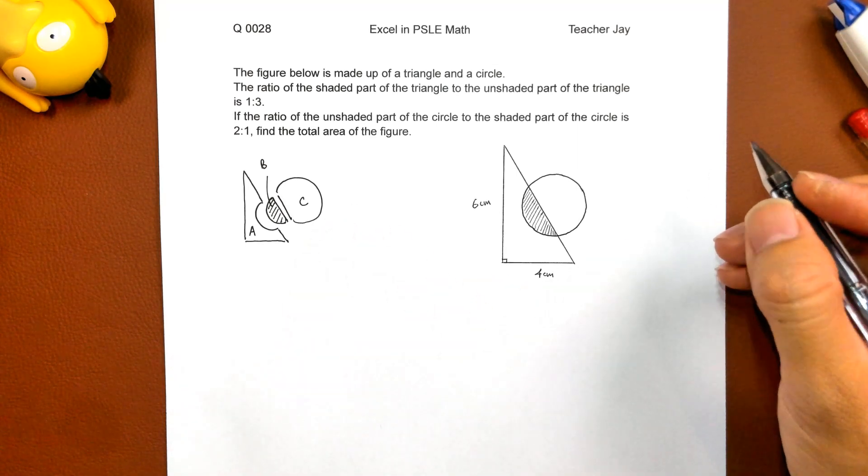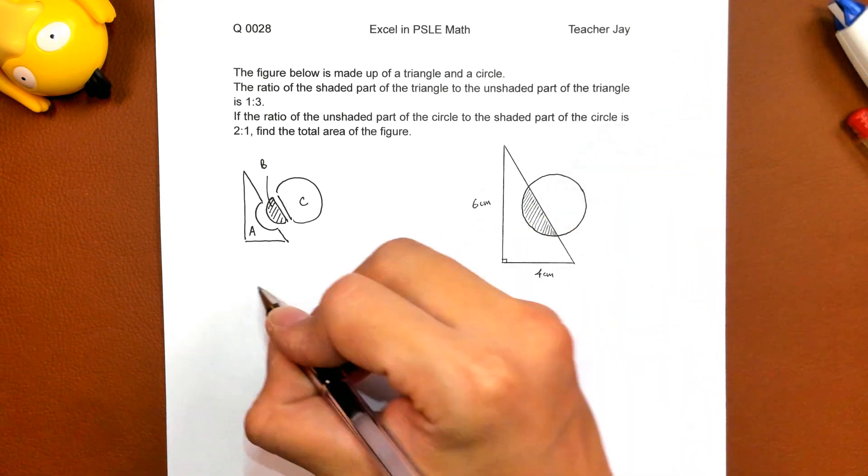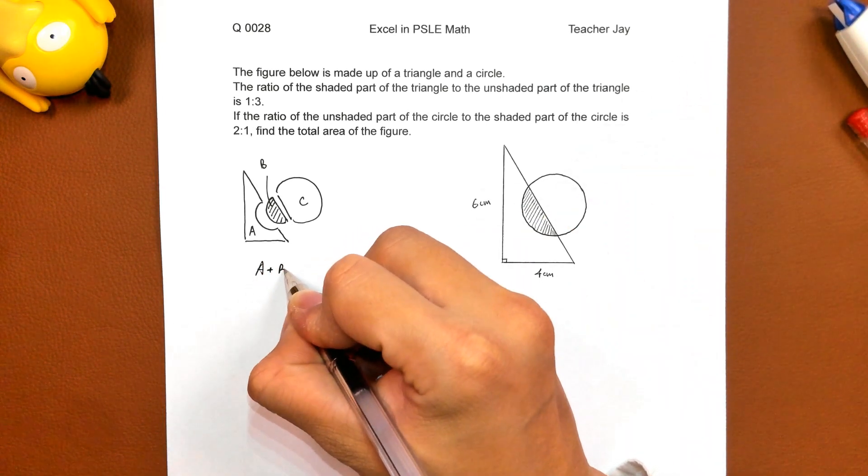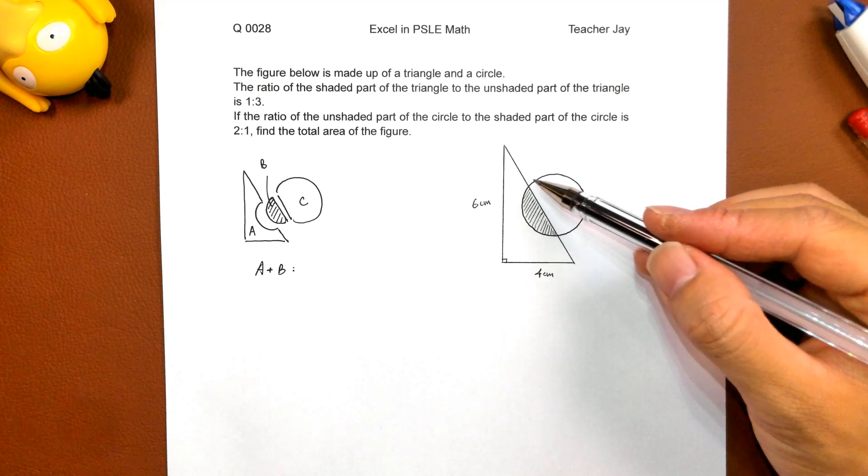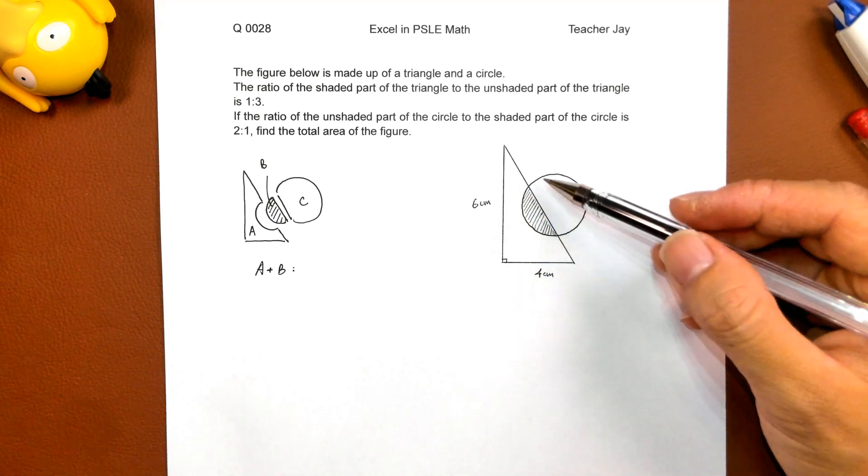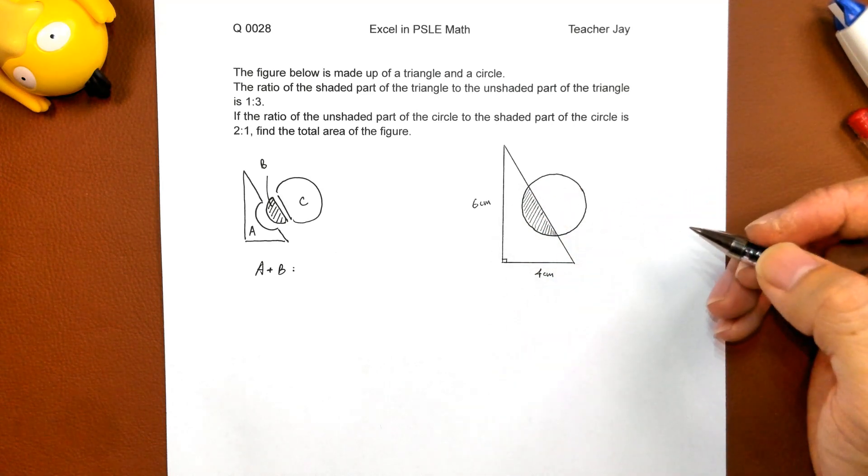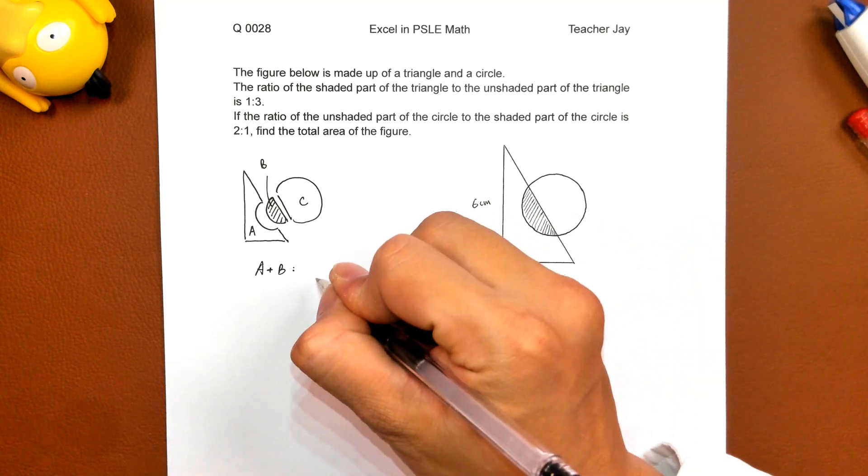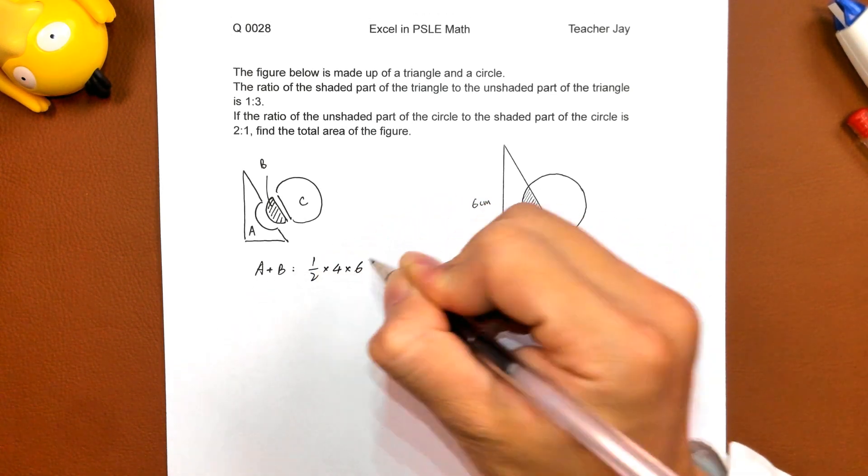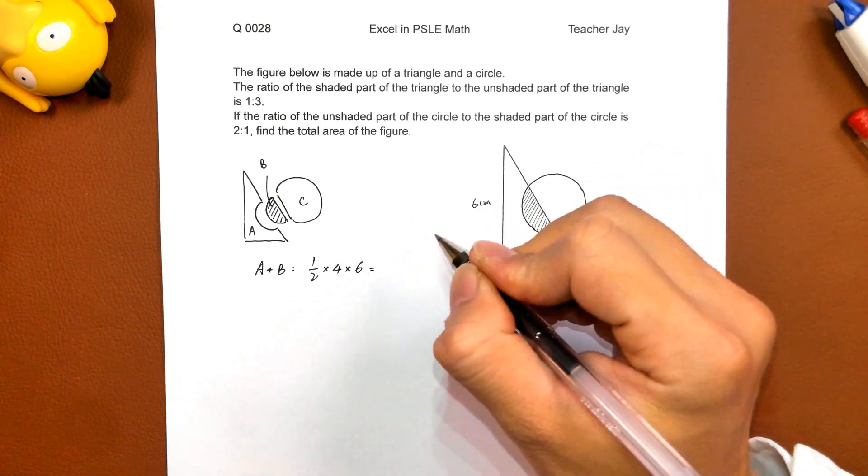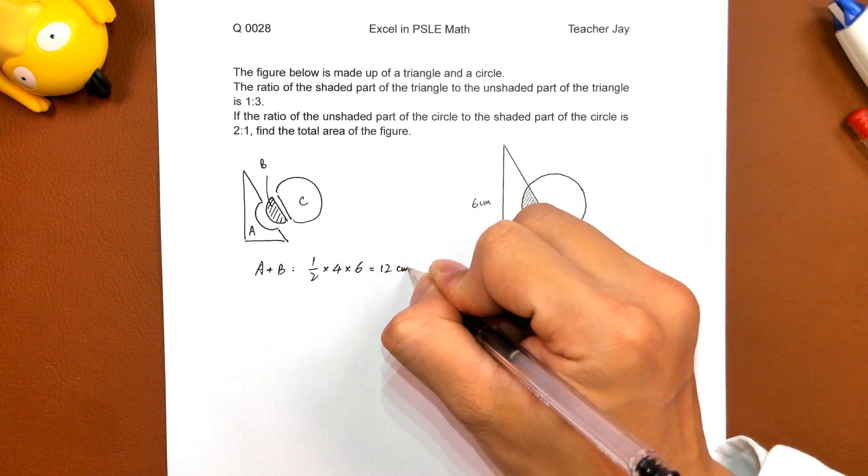And as we know, A plus B is the area of the triangle. Actually it's a right angle triangle. So the area of the triangle is half times the base, 4, times height, 6, is 12 square centimeters.